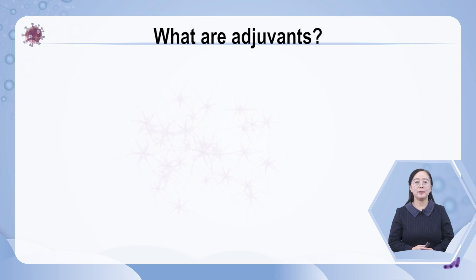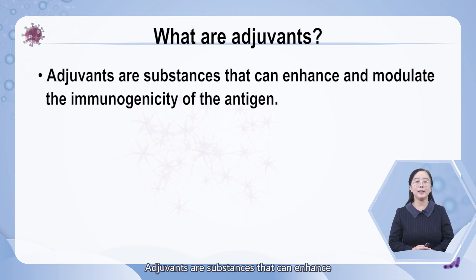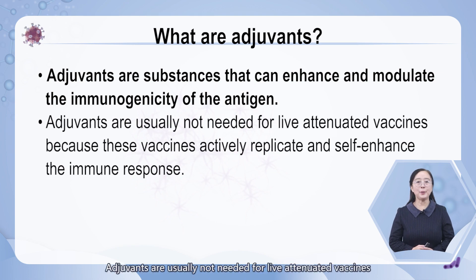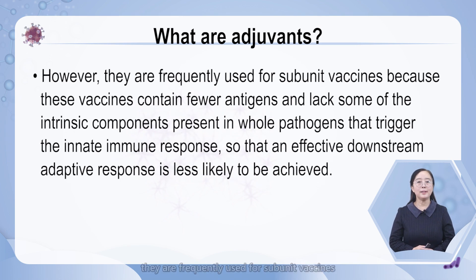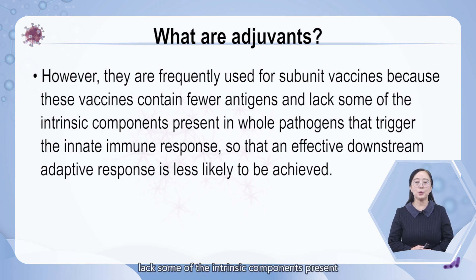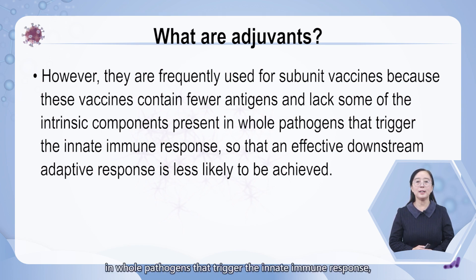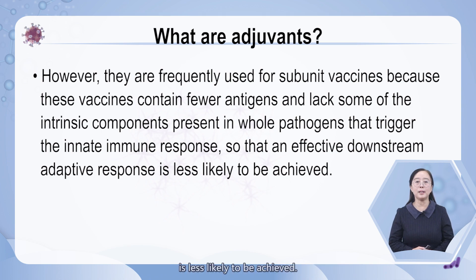What are adjuvants? Adjuvants are substances that can enhance and modulate the immunogenicity of the antigen. Adjuvants are usually not needed for live attenuated vaccines because these vaccines actively replicate and self-enhance the immune response. However, they are frequently used for subunit vaccines because these vaccines contain fewer antigens and lack some of the intrinsic components present in whole pathogens that trigger the innate immune response, so that an effective downstream adaptive response is less likely to be achieved.